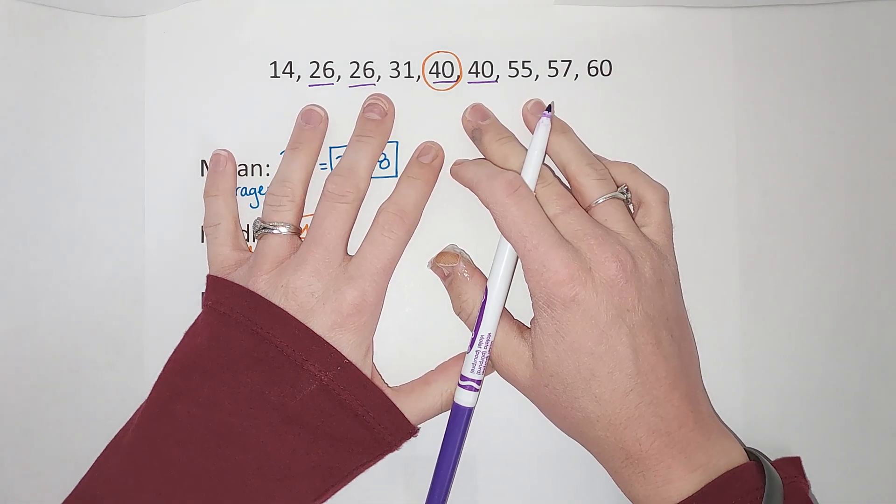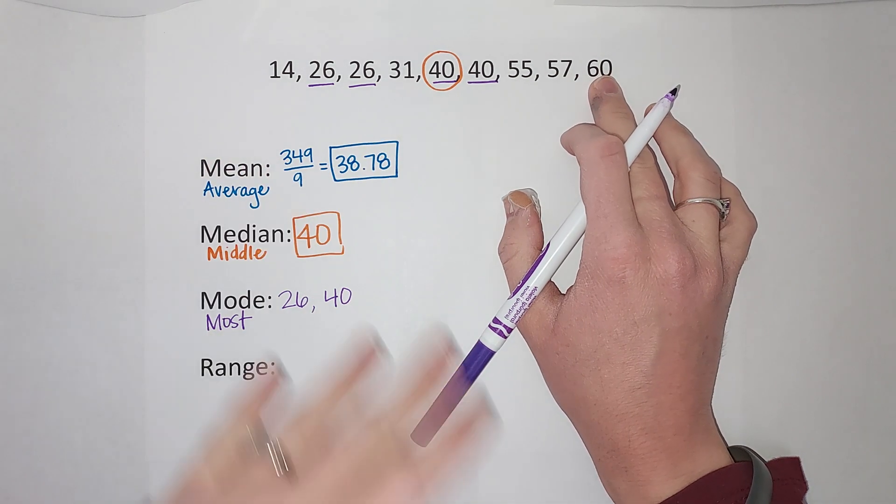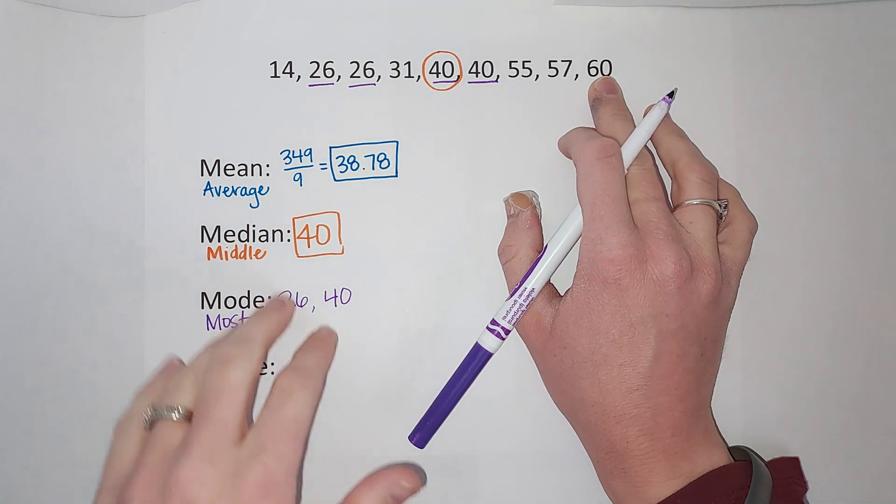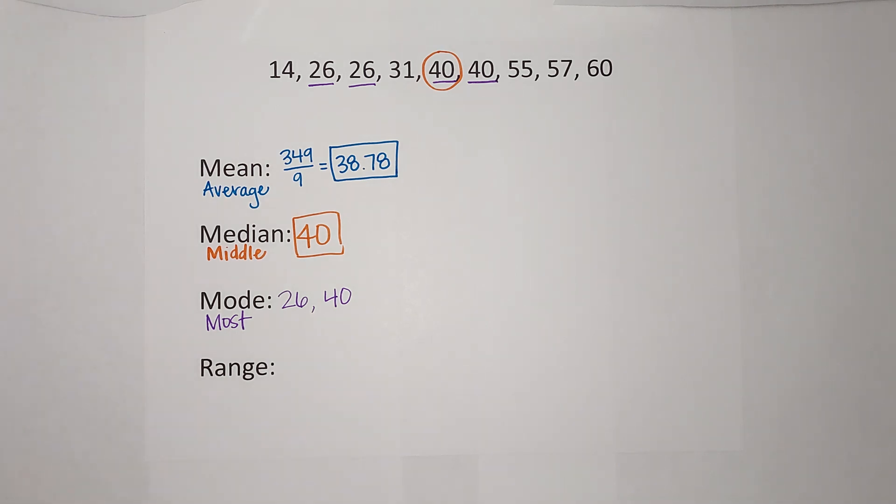If there wasn't a repeating number then I wouldn't have a mode. If there was a number here that was repeated like three times, say I had three 60s, 60 would be my mode and 26 and 40 would not. So it's not just a number you see more than once, it's the one you see the most.